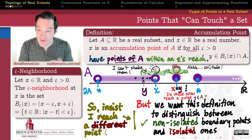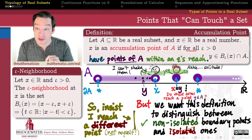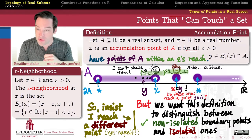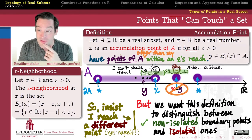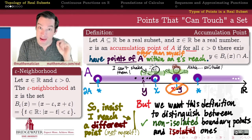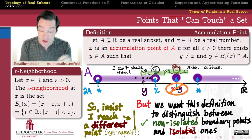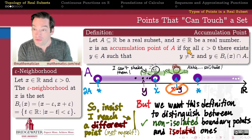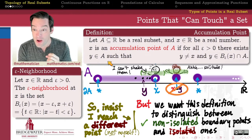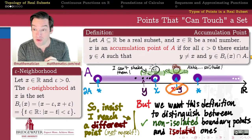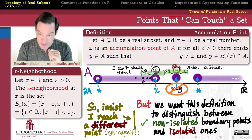We want to rule that case out. We want our epsilon arms to reach a different point of A, distinct from ourselves. So we explicitly rule out the case where X equals Y. An accumulation point is a real number for which every epsilon neighborhood contains a point Y different from X that belongs to the set A. That's our definition for accumulation point.